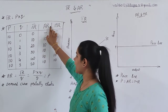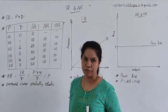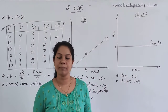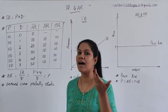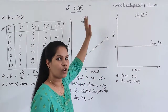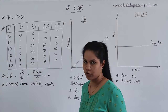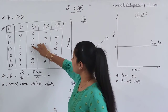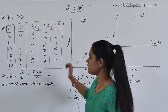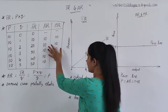For the AR formula, it is TR by Q: 10 by 1, 20 by 2, 30 by 3, 40 by 4, 50 by 5. For marginal revenue, the formula is TRn minus TRn-1 — keep subtracting the previous value from the next: 10 minus 0, 20 minus 10, 30 minus 20, and so on. After knowing these formulas, you are going to construct the diagrams for TR, AR, and MR.